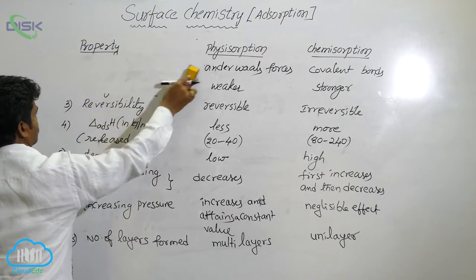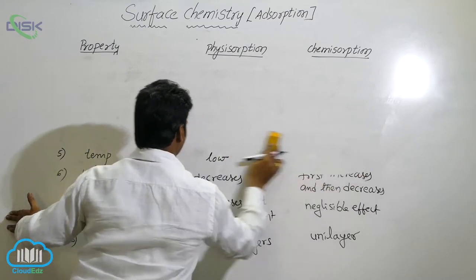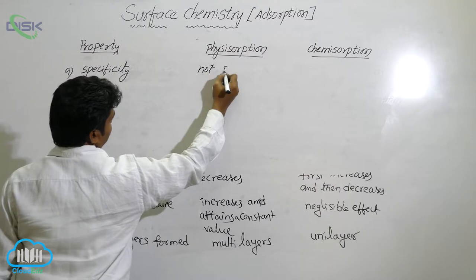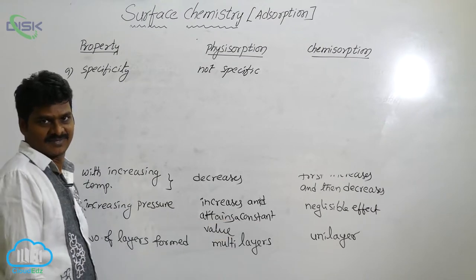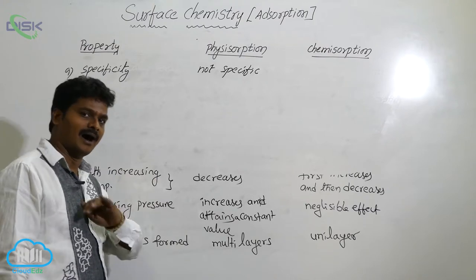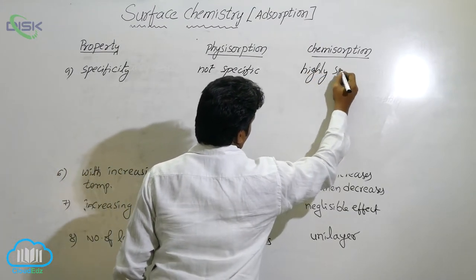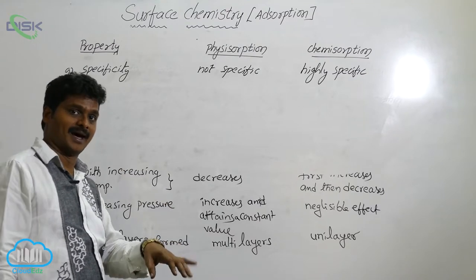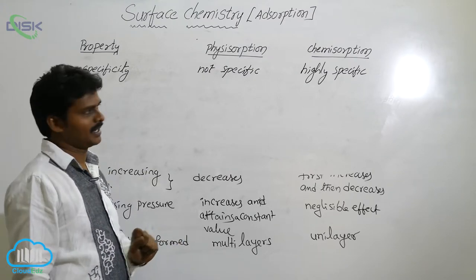The next property is specificity. Physical adsorption is not specific — it takes place on all surfaces, there is no specific surface required. But chemical adsorption is highly specific, meaning only particular substances are chemically adsorbed on particular surfaces. For example, hydrogen gas is chemically adsorbed on a nickel surface.